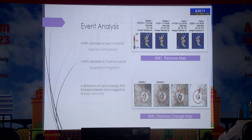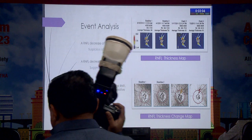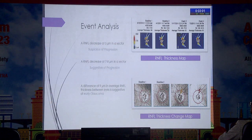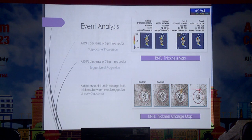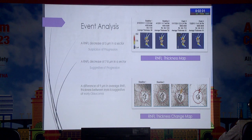Just like visual fields use event and trend analysis, OCT progression can also be divided into event analysis and trend analysis. In event analysis, the RNFL thickness map is shown — the two baselines are compared with subsequent follow-up visits. The thickness change map marks changes detected for the first time in yellow, then red. Remember: a change of 5 microns in a sector is suspicious of progression, and 7 to 8 microns is suggestive of progression.